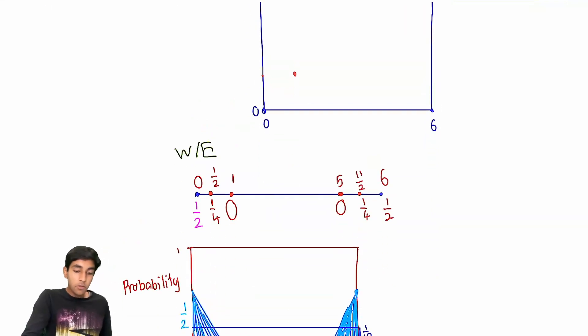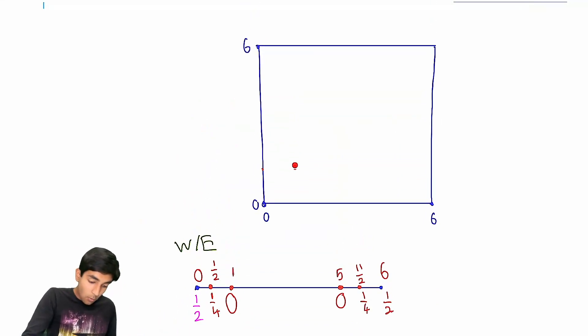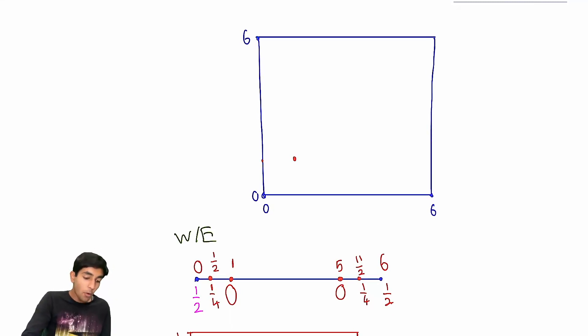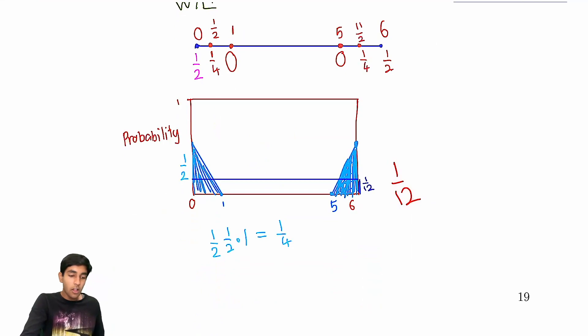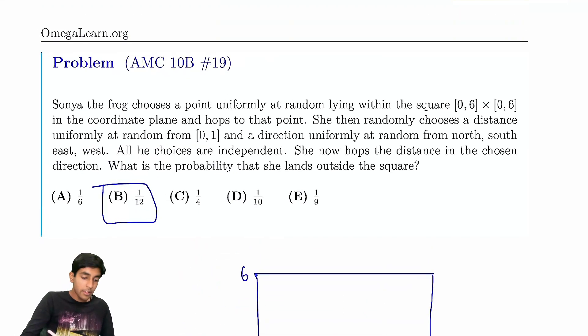So, the key trick here is noticing the symmetry between west-east and north-south. West-east, we only care about the x-coordinate. And north-south is also going to be the same thing, except now we look at the y-coordinate and we don't really care about the x-coordinate because we're not changing the x-coordinate by jumping north or south. So, both of these cases have a one-twelfth probability of happening. Because they're both equally likely to occur, our answer is just one-twelfth.